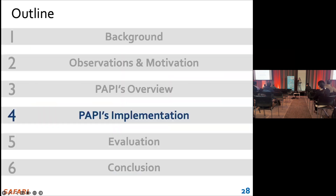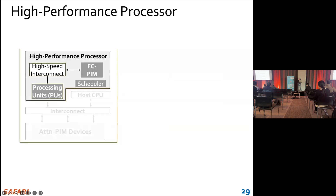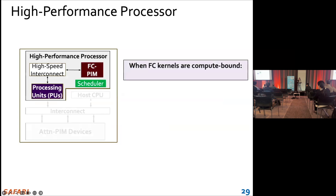Next, I will describe how to implement our work. Let's look at the high-performance processor in the PAPI architecture first. It includes a scheduler to do dynamic scheduling and two kinds of computing units: processing units and FC PIM. When the FC kernels are compute-bound, we assign them to the processing units, which are computation-centric.